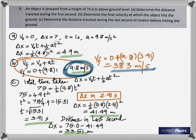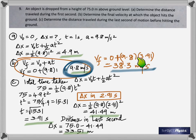Going back to part b — I had calculated the final velocity after only 1 second, which was not right. The object actually took 3.91 seconds to hit the ground, so you need the final velocity after 3.91 seconds. The correct answer is 38.3 m/s. I apologize for that oversight.